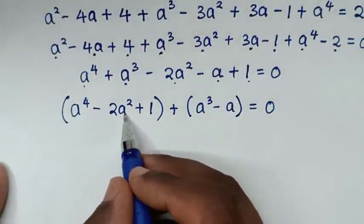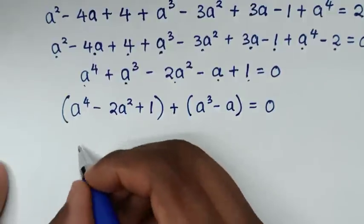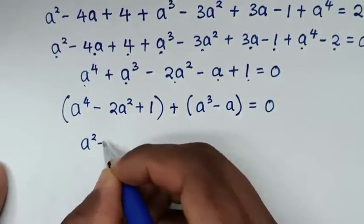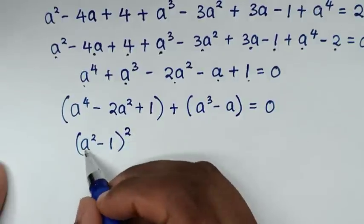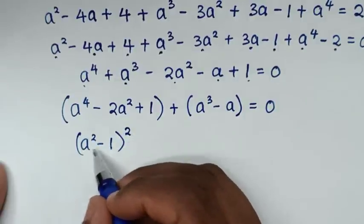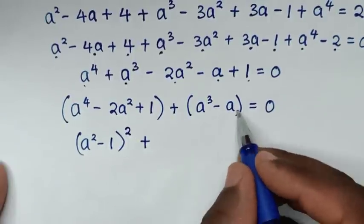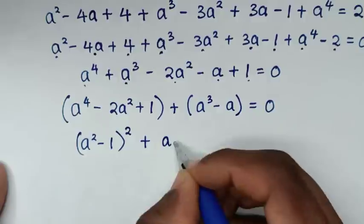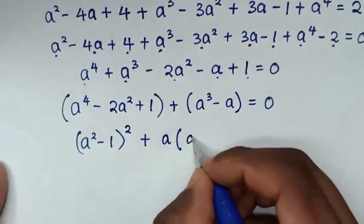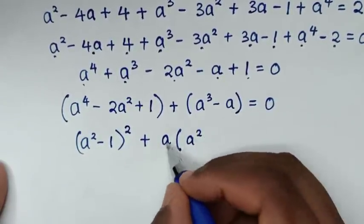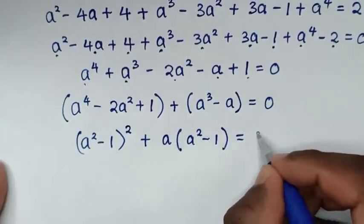From here, a power of 4 minus 2a square plus 1 is the same as (a square minus 1) bracket square. Then, in the second group, a is common, so we take a out of the bracket: a times bracket a square minus 1 bracket is equal to 0.